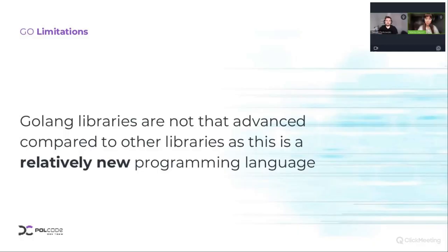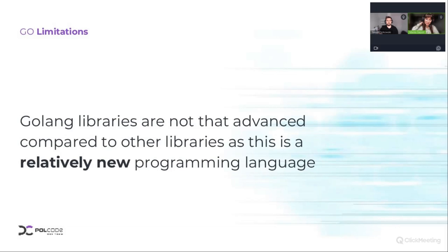The second limitation: Go's standard libraries are not so advanced. Go is a relatively new programming language, and there may be a miss of some third-party integration. Of course, keeping in mind that we can use some C and C++ code, it can be extended. But the community is constantly evolving and adding more value to Go's libraries, so we can expect more libraries coming soon. Though it is an open source language, it's relatively new compared to other languages, so I'm sure it will be evolving quickly.